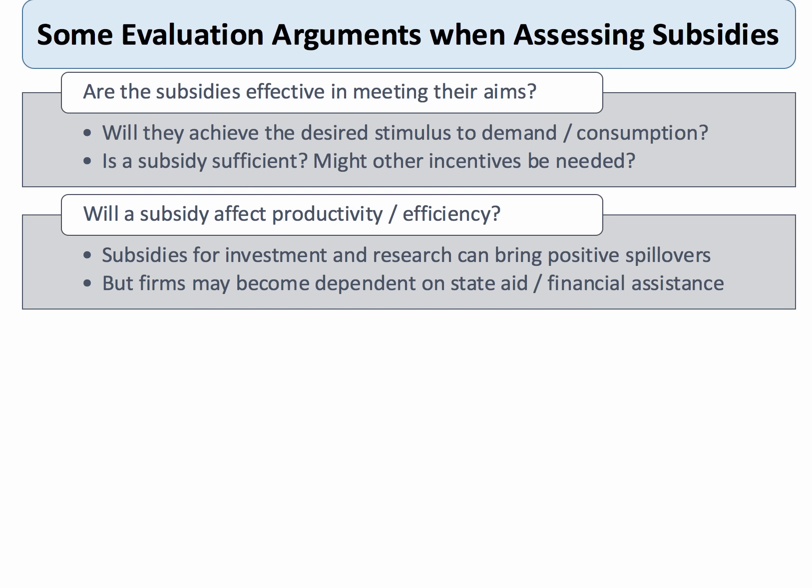Will a subsidy affect efficiency and productivity? One could argue that subsidizing apprenticeships for the youth unemployed could be a very effective long-run way of increasing the economy's productivity, though effects will take several years to show through. Is there a danger that firms in receipt of subsidies become over-dependent on state aid, causing their efficiency to suffer going forward?